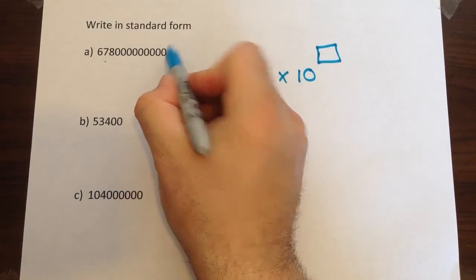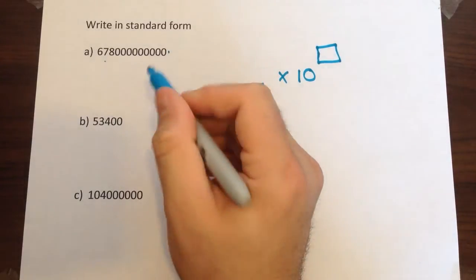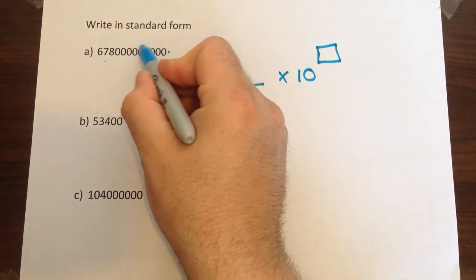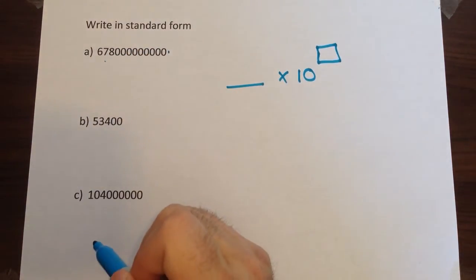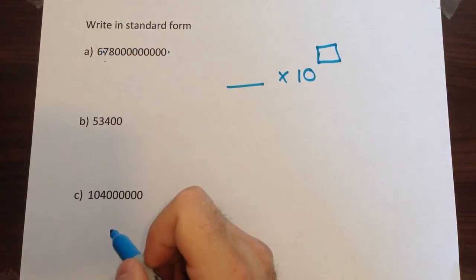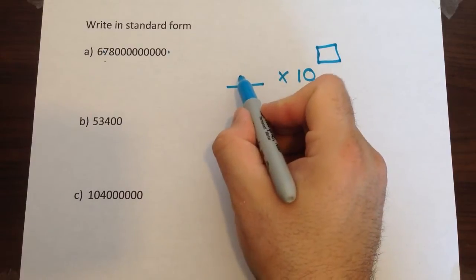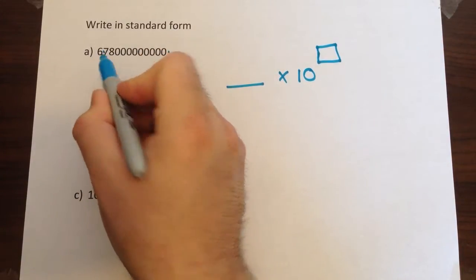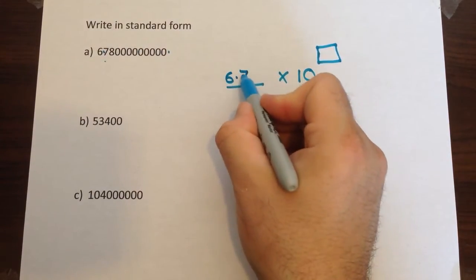Now the way we do that is at the moment the decimal point would be on the end of this number. We need to move it until we make a number that's less than 10. So that would mean between the 6 and the 7. So our first part of our answer is going to be these numbers here. It's going to be 6.78.